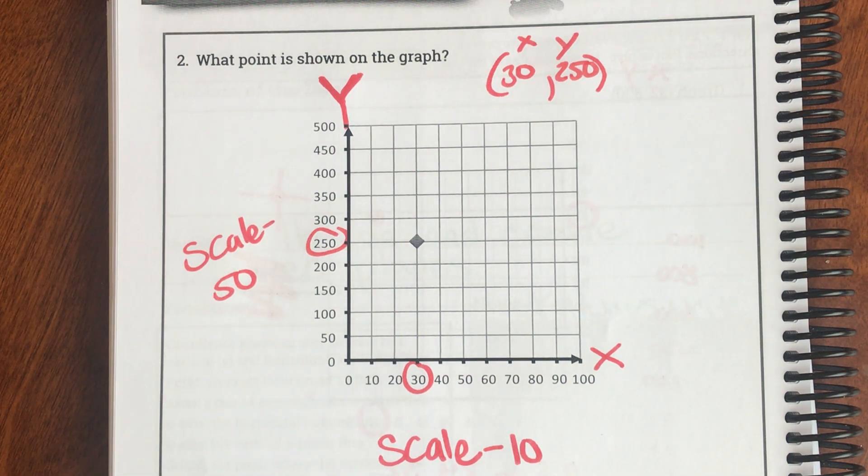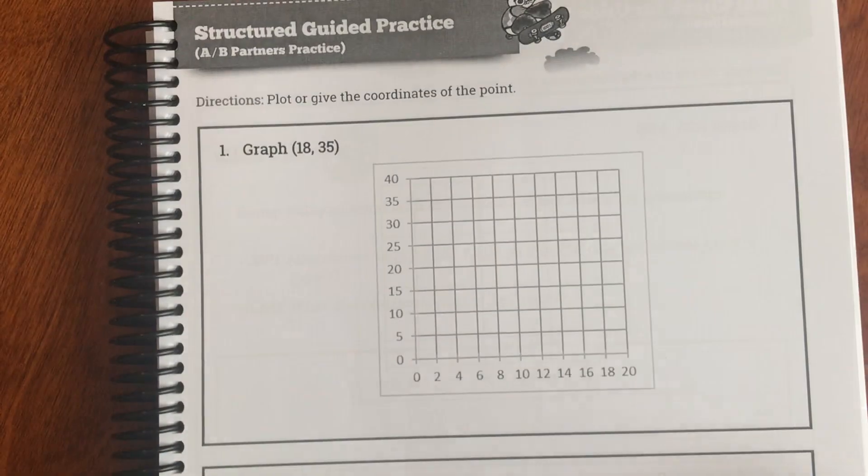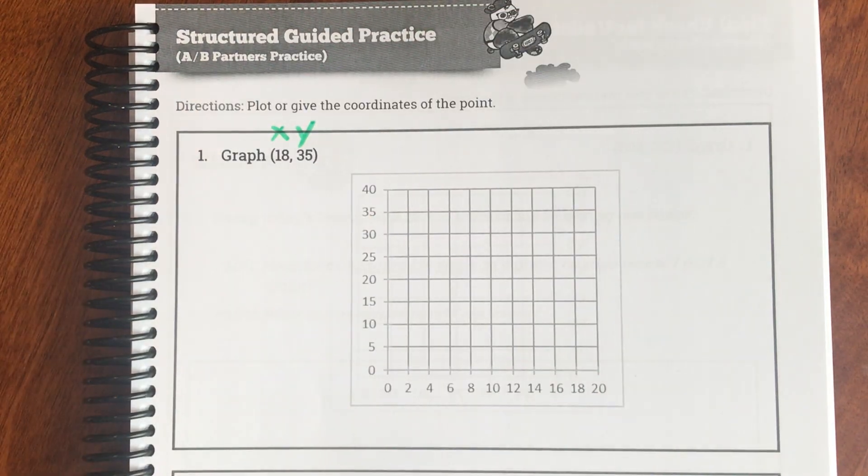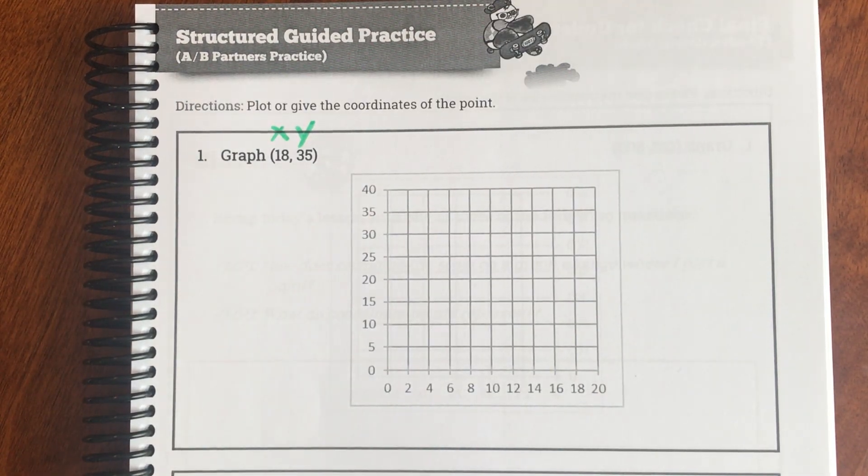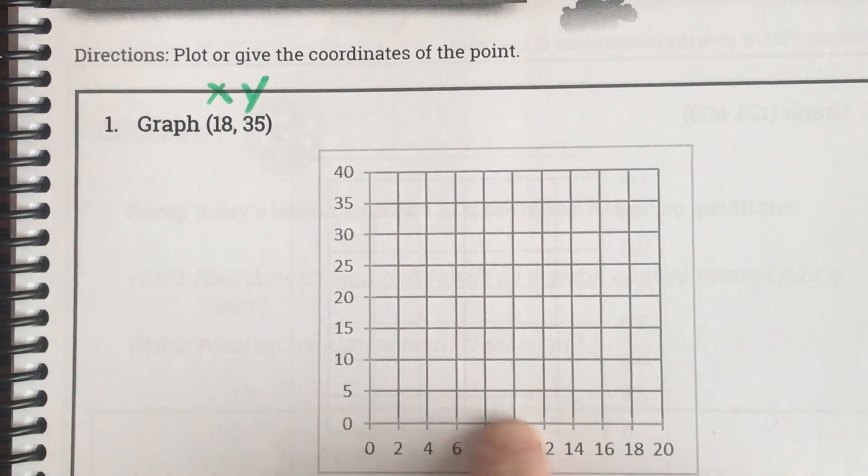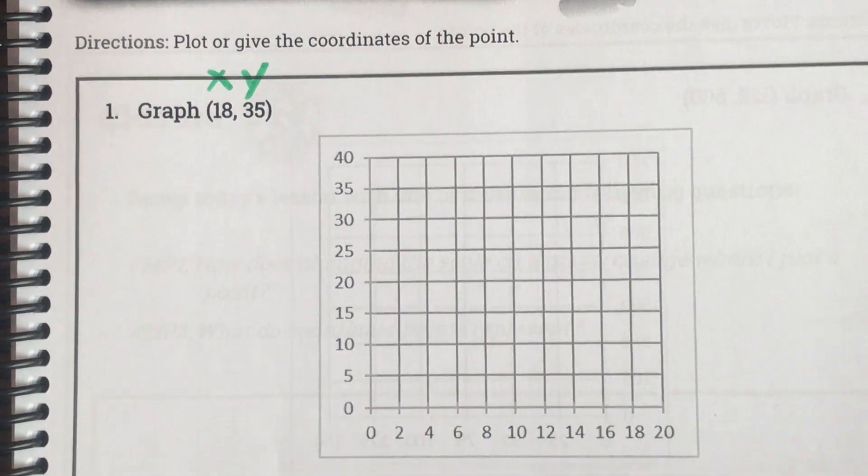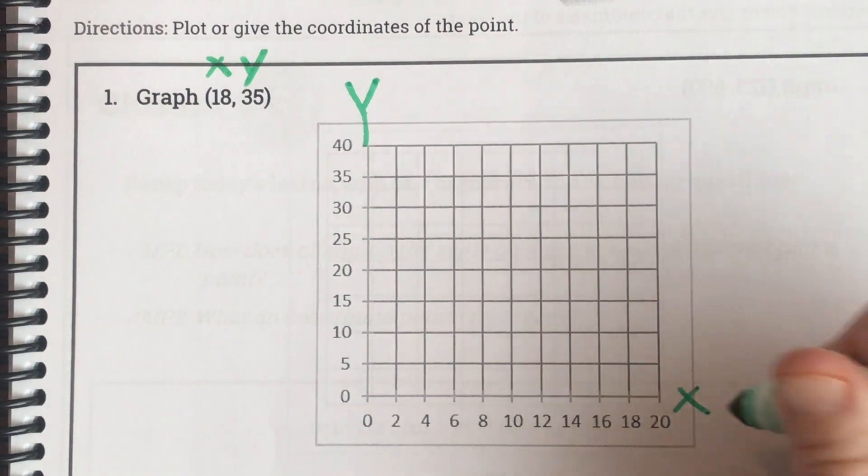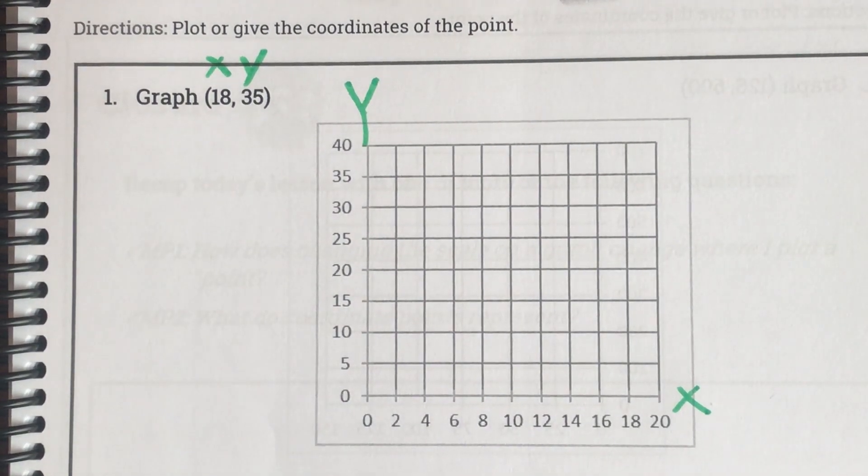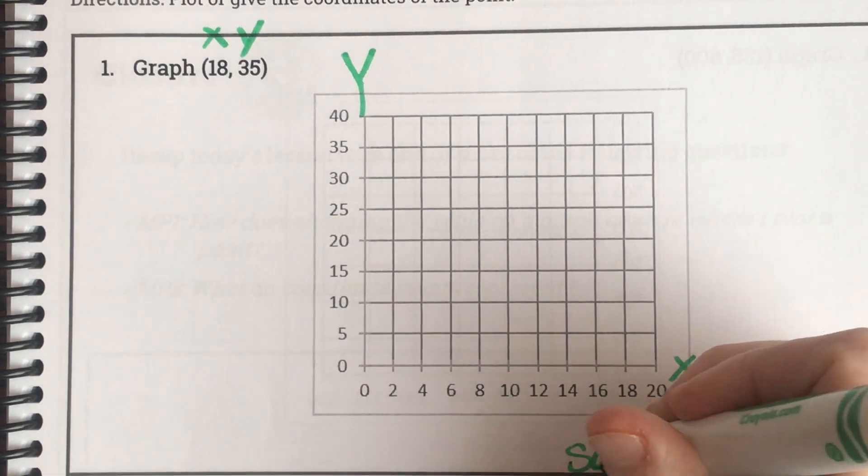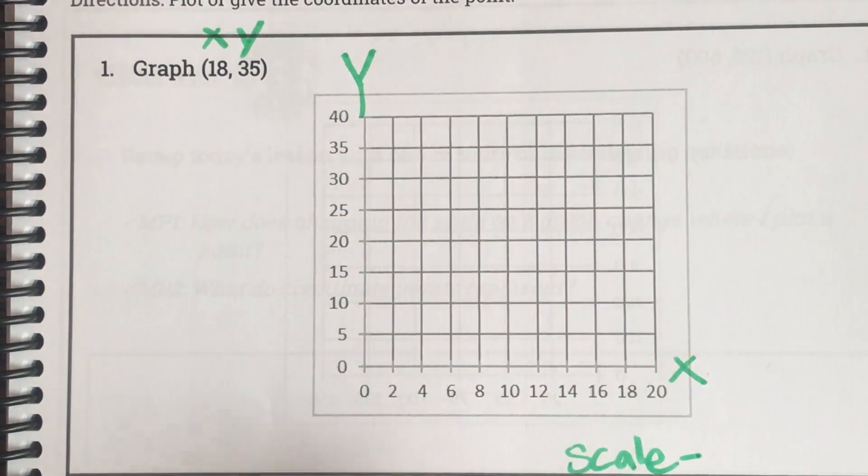Let's try some together. It says graph 18, 35. Let's always, always, always put our x and our y. It's just a really good habit to get in. Now they didn't label our axes again. They want us to have to remember that. So this is my y-axis and this is my x.